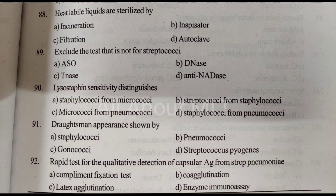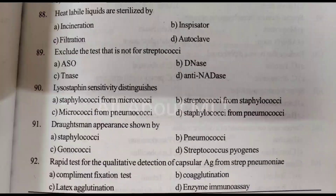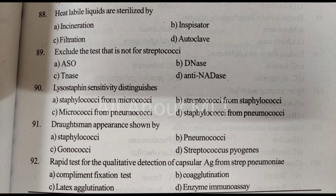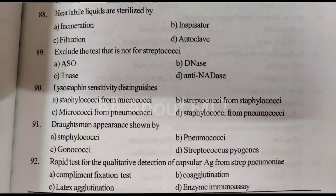Exclude the test that is not for streptococci. Option A: ASO test. Option B: DNase. Option C: DNase. Option D: Anti-NADase. Answer is Option C: DNase.